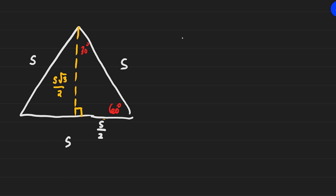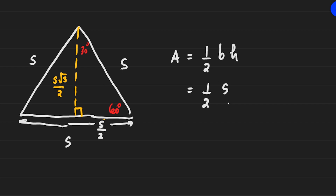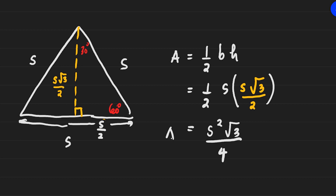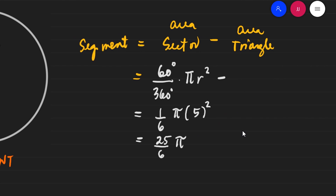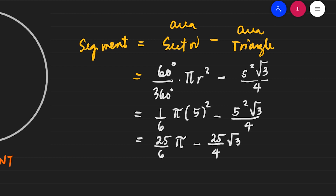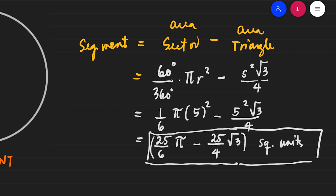The area of the triangle is one-half times base times height. The base is s, and the height is s times square root of 3 over 2. Multiplying gives s squared times square root of 3 over 4. So the formula for the area of an equilateral triangle with side s is: s squared times square root of 3 divided by 4. Using this, the area of our equilateral triangle with side 5 is 25 square root of 3 over 4 square units.